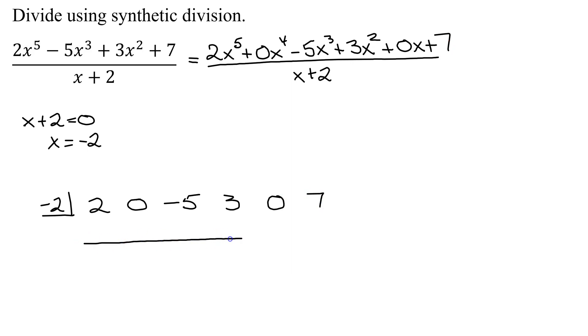Leave yourself a little bit of room and now we're ready to start the process. The first thing you do is bring down the first number as is, so you bring down the 2. Now you're going to take your negative 2, multiply it by 2 and write the answer up here. Negative 2 times 2 is negative 4. You add these two numbers together: 0 added to negative 4 is negative 4.